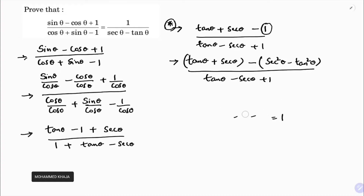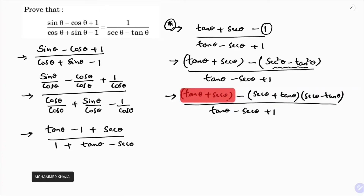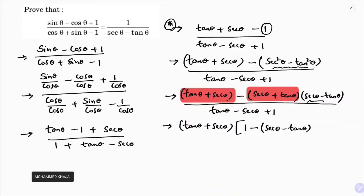So sec²θ - tan²θ is in the form of a² - b², which factors as (a + b)(a - b), giving (sec θ + tan θ)(sec θ - tan θ). The numerator now becomes tan θ + sec θ plus (sec θ + tan θ)(sec θ - tan θ), all over the same denominator tan θ - sec θ + 1. Taking (tan θ + sec θ) common from the numerator, we get (tan θ + sec θ) times (1 + sec θ - tan θ).